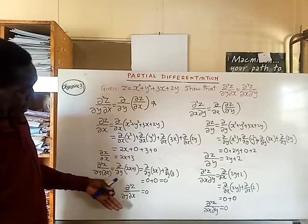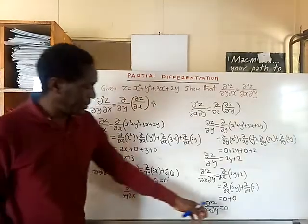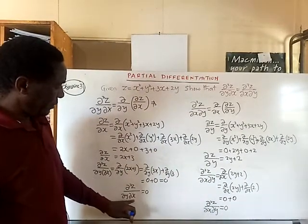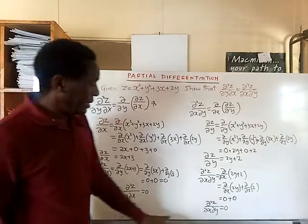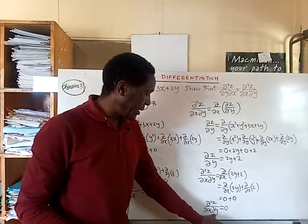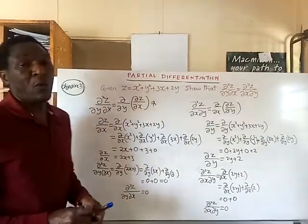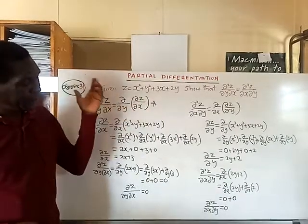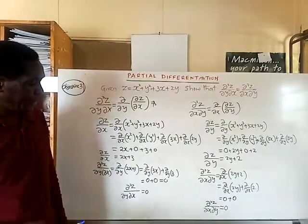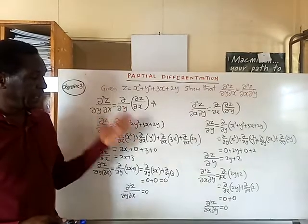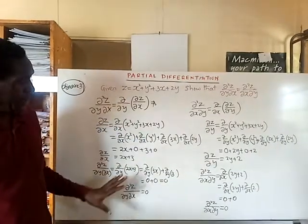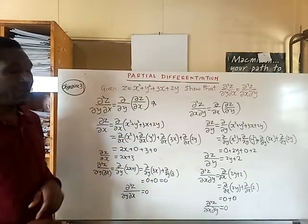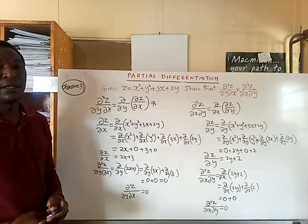As you can see, the result from the first differentiation path is the same as from the second. So we conclude that the second partial derivative of z — first with respect to x, then with respect to y — is the same as the second partial derivative of z — first with respect to y, then with respect to x — as required. This result is very important when finding stationary points using partial differentiation, which we will apply in the next lesson looking at Objective 3.